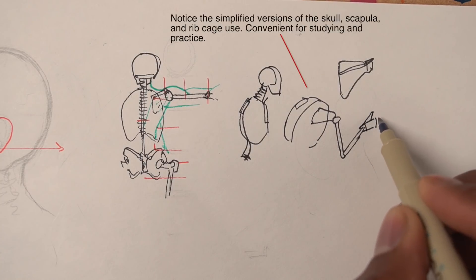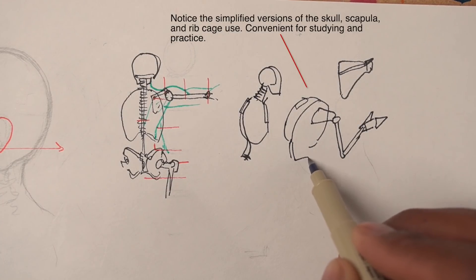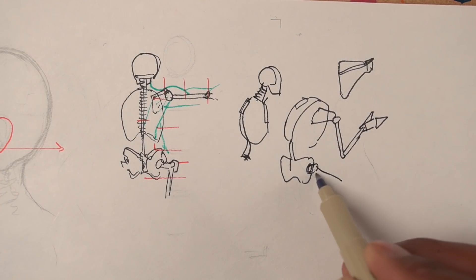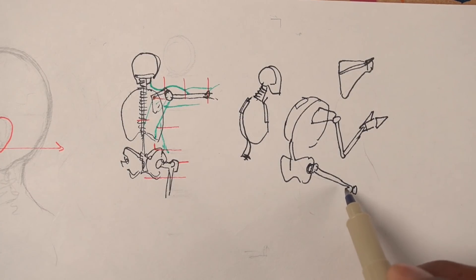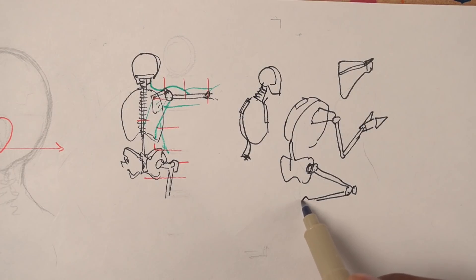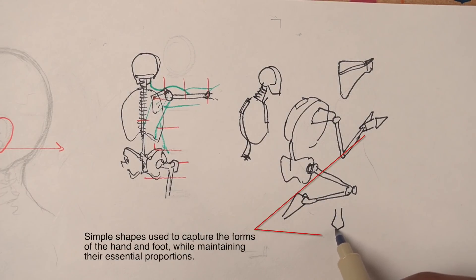For example, understanding the planes of the head. The planes of the head follow the planes of the skull. Understanding where the front plane starts, the side plane, all of those planes follow the structure of the skull. That's why sometimes you see drawing students do lots of studies of the skull in order to draw the head. The more familiar you are with the structure of the skull, it's much easier to draw the head. You know where the wrinkles are, where the bumps are, where the muscles attach.